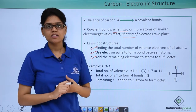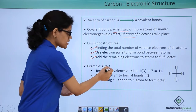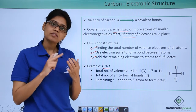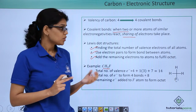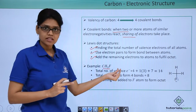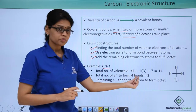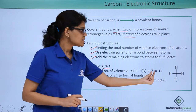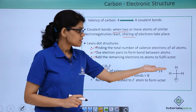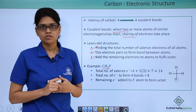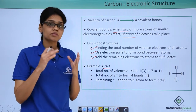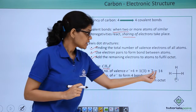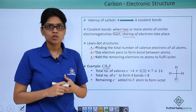Let us understand this by taking an example: CH₃F. The different atoms we have are carbon, hydrogen, and fluorine. Carbon has 4 valence electrons, hydrogen has 1 but there are 3 hydrogen atoms, and fluorine has 7. Adding all of these gives us 14 as the total number of valence electrons. Carbon forms 4 bonds, which consumes 8 electrons, so subtracting 8 from 14 we have 6 electrons remaining.